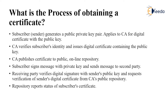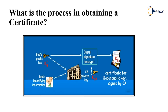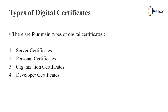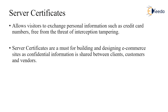The repository reports the status of the subscriber's certificate. In this process, Bob's public key and identity information are given to the certificate authority, which generates a digital signature. The certificate for Bob's public key is then signed by the CA and issued to Bob. There are several types of digital certificates: server certificate, personal certificate, organization certificate, and developer certificate.